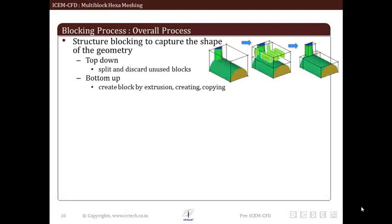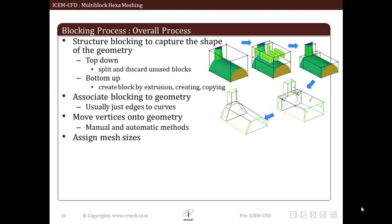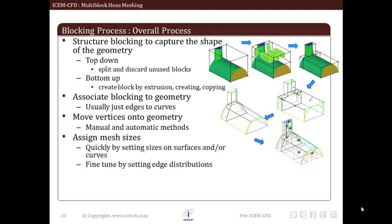Now let's get an overview of the blocking process. It generally follows below process. First, we initialize the block. Then, we decide approach of blocking that is either top down or bottom up. Once blocking topology is decided, we associate vertices and edges to points and curves. Then we decide node distribution on edges of blocks that is to define mesh. Then we preview mesh, check quality of mesh and if needed, improve quality. Once appropriate quality is achieved, we write out output file which will be input for solver.